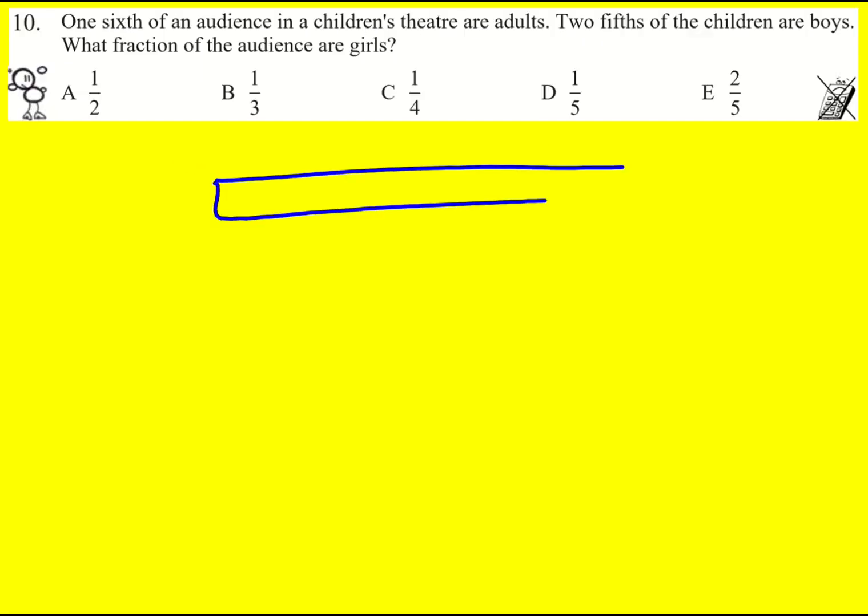We've got an audience at the theatre and one-sixth are adults, which means that five-sixths are going to be children.